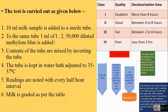The milk is of excellent quality if the decolorization time is more than 8 hours; good quality if it is 6 to 8 hours; fair quality if it is 2 to 6 hours; and poor quality if it is less than 2 hours. Based on the MBRT test, there are four classes of milk quality: excellent, good, fair, and poor.